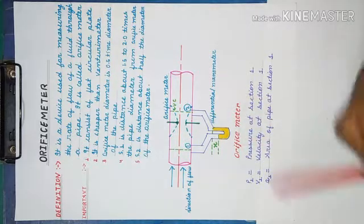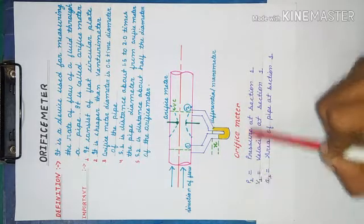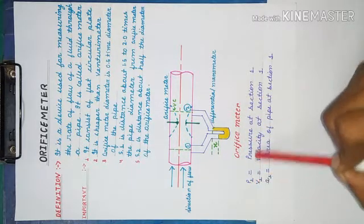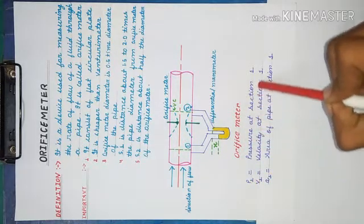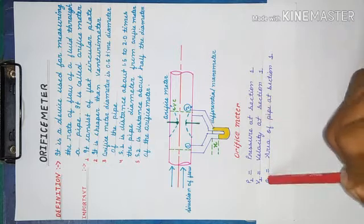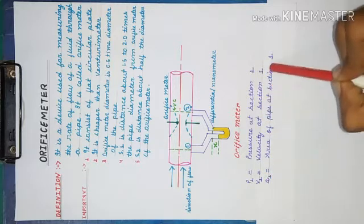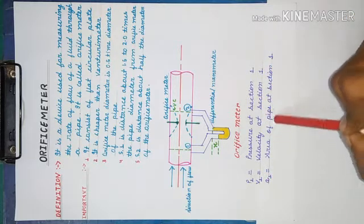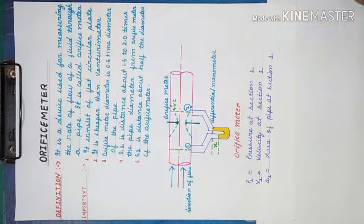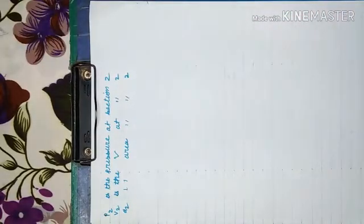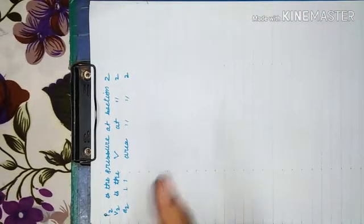P1 is the pressure at section one, V1 is the velocity at section one, and A1 is the area of the pipe at section one. At section two, these values are compared with Bernoulli's equation.